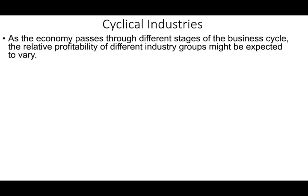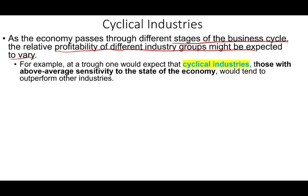When we go through business cycles, not all companies are the same. Certain companies do better than others, and we have to differentiate between different industries. We can break industries into two types: cyclical and defensive. As the economy goes through different stages of the business cycle, the relative profitability of different industry groups may vary. At the trough, once we are starting to recover, cyclical industries — those with above-average sensitivity — would tend to outperform other industries.